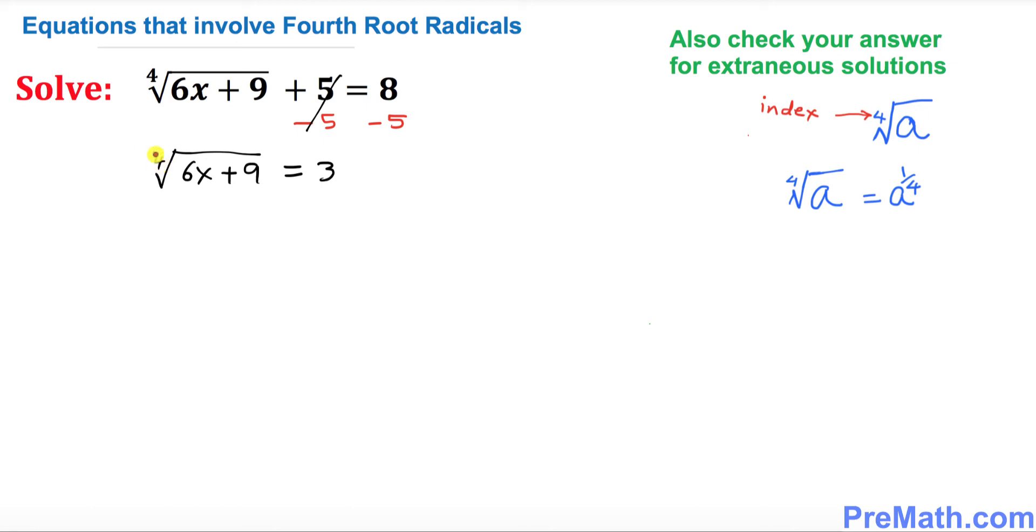Now we want to get rid of this fourth root. In order to undo the fourth root, we need to take power four, and we're going to take the power on this side as well.